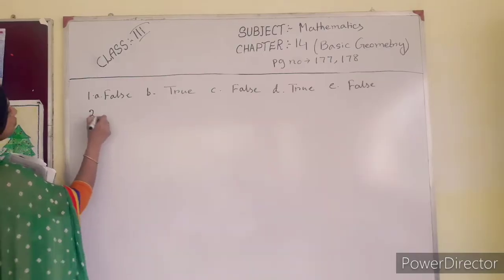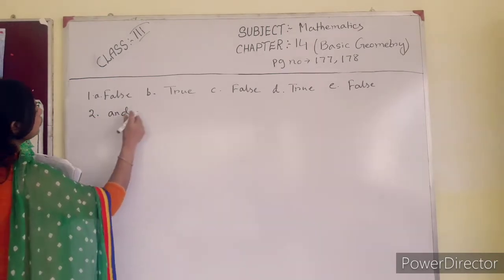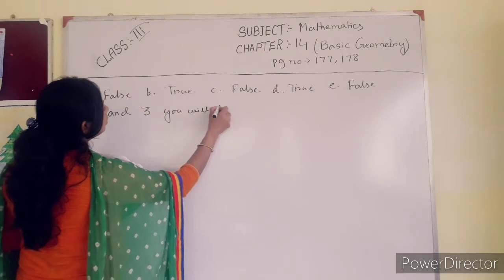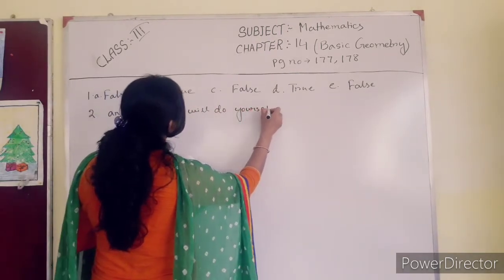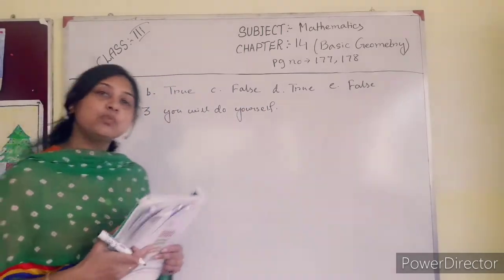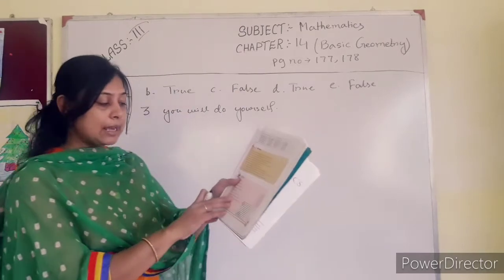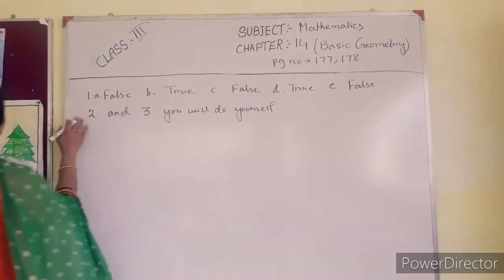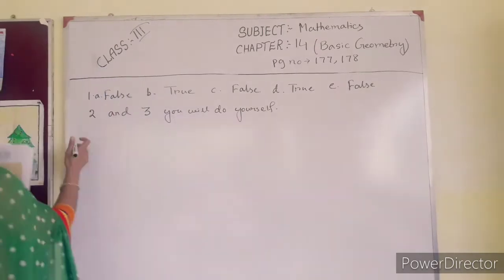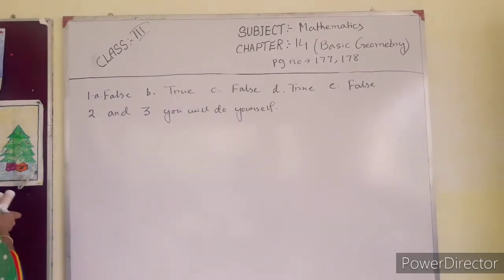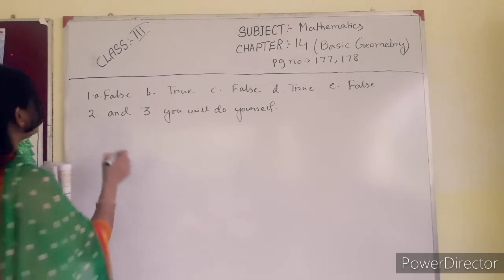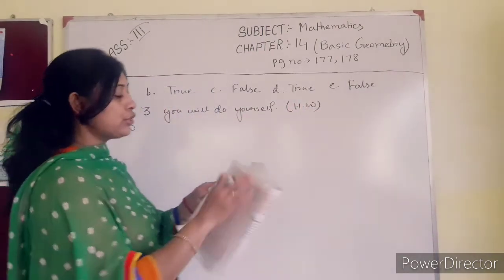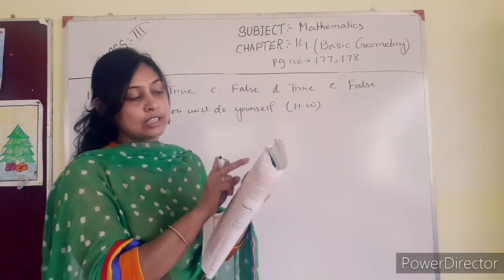Okay, question number 2 and question number 3 you will do yourself. Number 2 is: construct a line segment of length 8 cm — you can draw it using a ruler. Question numbers 2 and 3, you will do yourself. Number 4 is also your homework: which of the following is not a reading pattern — just find out which is not a reading pattern.